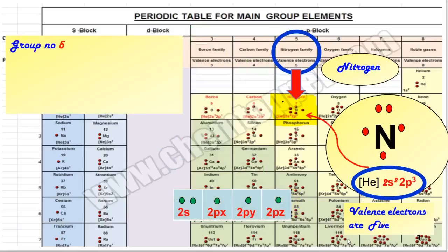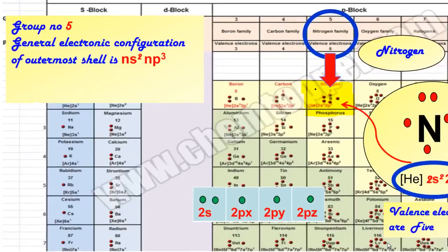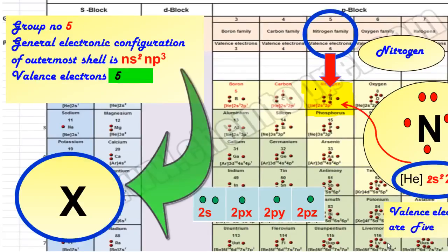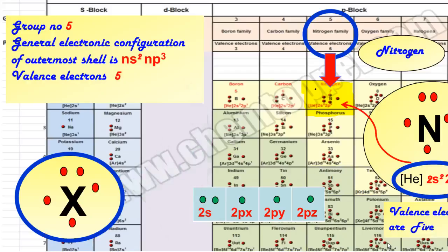All Group 5 elements with general electronic configuration of ns2 and np3 have 5 valence electrons. So first you write down the symbol and place these 5 electrons: 2 electrons as a pair from the s orbital and 3 electrons as unpaired from the p orbital.